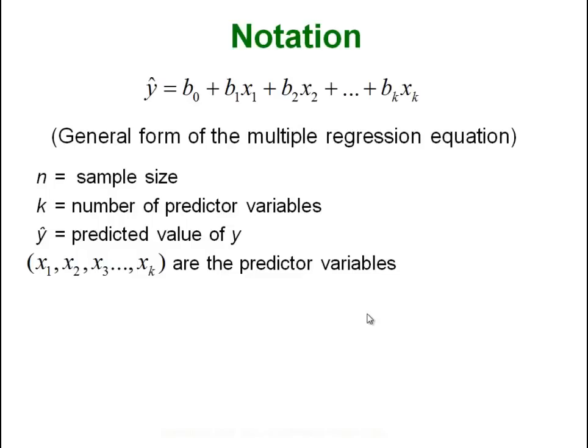n is still your sample size. k is a new variable we haven't seen and it's just your number of predictor variables—how many x's you have. y-hat is still your predicted variable.